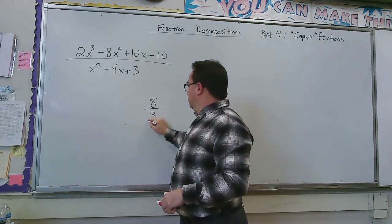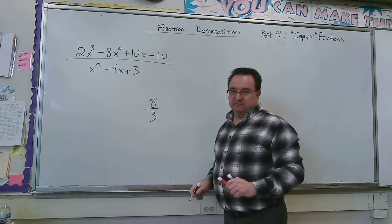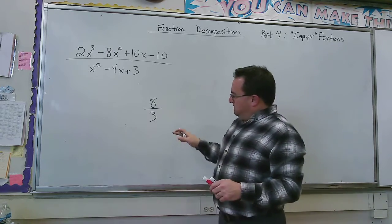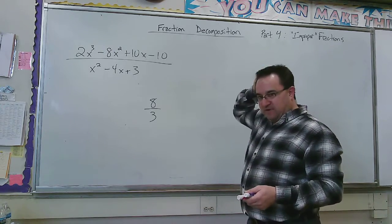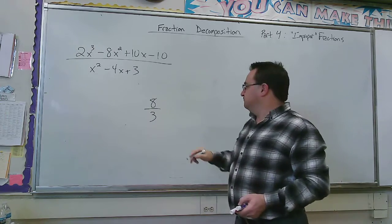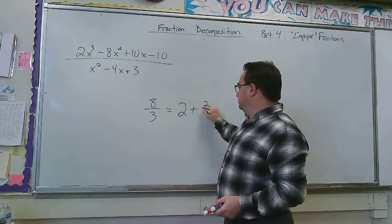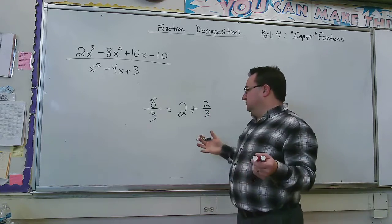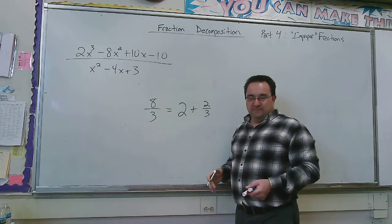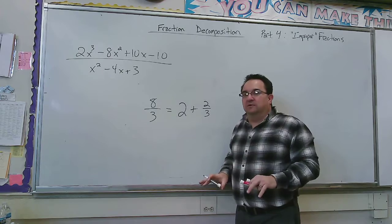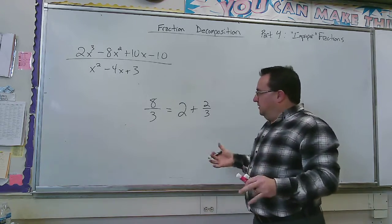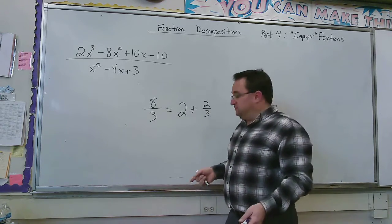I think in the last video I talked about the fraction 8 thirds. This is called an improper fraction because the top is larger than the bottom. And what I can do is I can write that as 2 plus 2 thirds. Now that's probably pretty obvious, but let's go a little more basic. I'm talking elementary school. Look at this.